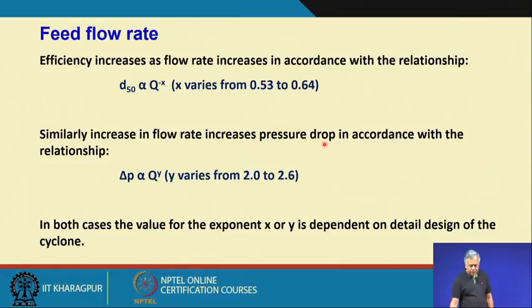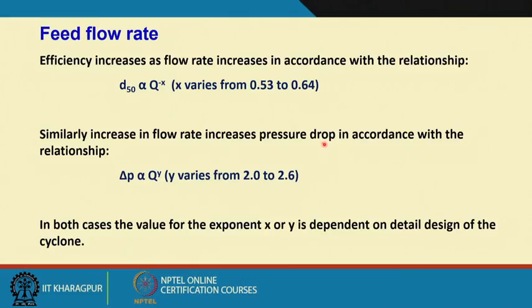Similarly, increase in flow rate also increases pressure drop. Pressure drop in the case of a hydrocyclone is defined as the pressure at the inlet and pressure at the tip of the vortex finder. In accordance with the relationship, ΔP is proportional to Q to the power y, where y varies from 2 to 2.6 — meaning with increase in feed inlet flow rate, pressure drop also increases. In both cases, the value of exponent x or y is dependent on the detailed design of the cyclone, which is why these are only guiding tools; you must develop your own model based on your own laboratory data.